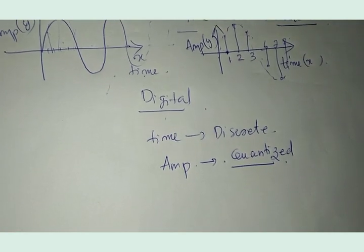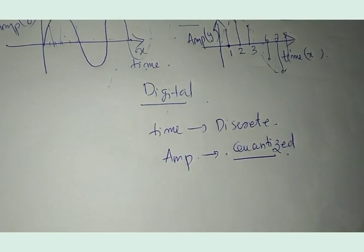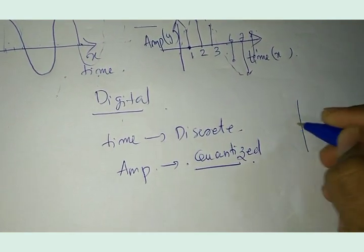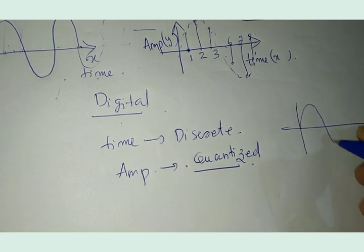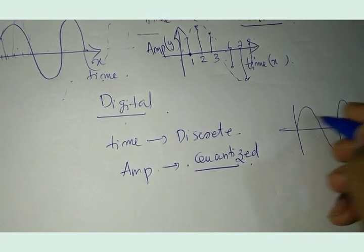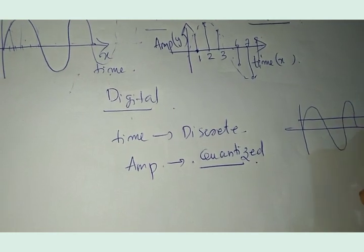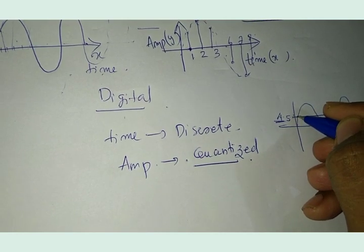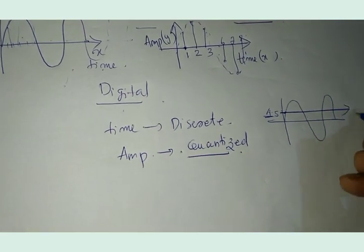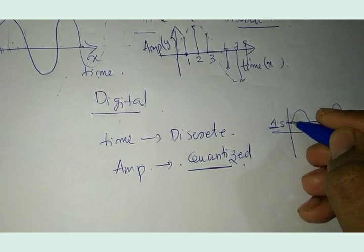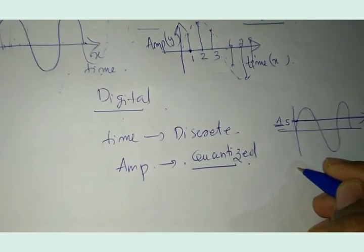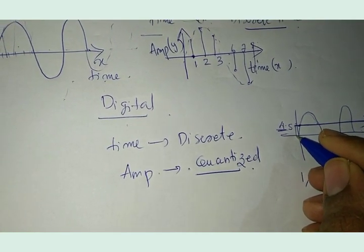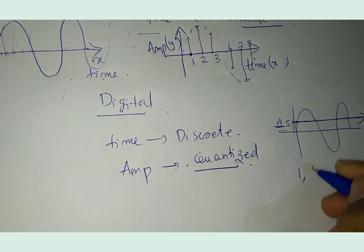If you do not know what quantization is, I will briefly explain. Say, if this is an analog signal, for quantizing the signal I will set a threshold — say, 4.5. If the value of the signal is above 4.5, I am going to mark it as 1, and if the value is below 4.5, I am going to set it as 0.